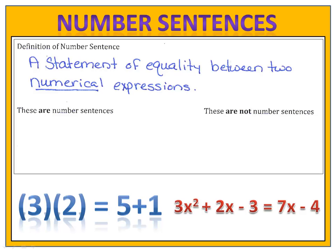An example of a number sentence: 3 plus 5 equals 4 plus 4. An example that is not a number sentence: 3x plus 5 equals 2. X is an unknown, so it's not a number sentence.